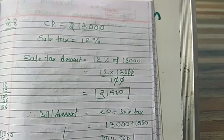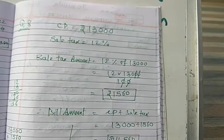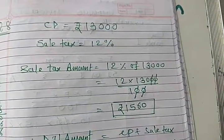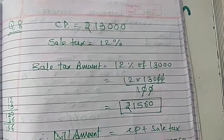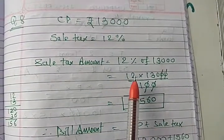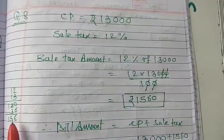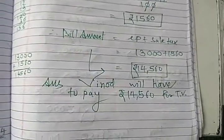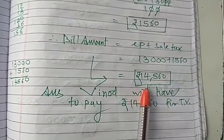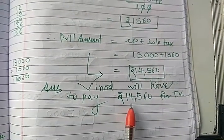Question number 8. CP is equal to 13,000 rupees, sales tax given is 12 percent. So first of all you have to find out the sales tax amount. Total cost price, on that it applies. So 12 percent of total CP which is 13,000, so 12 into 13,000 upon 100, you will get 1,560. So the amount required to pay is equal to cost price plus sales tax. So total 14,560. So Vinod will have to pay rupees 14,560 for TV.